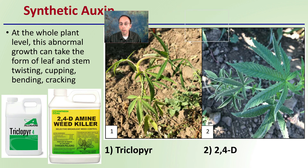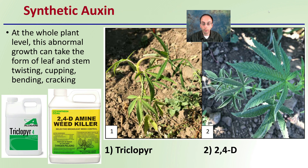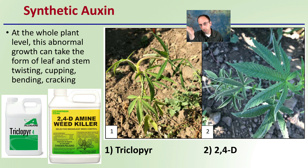Lastly, synthetic auxins — there are different types. At the whole plant level, abnormal growth can take the form of leaf and stem twisting, cupping, bending, cracking, and sometimes curling. We see evidence here of the plant just getting a funky look to it. Just because you see leaf curling doesn't always mean herbicide was applied, but if you know one of these has been applied in the area — particularly 2,4-D, which is very well known for its drifting abilities — and you see this curling, that's an indication you may be getting some herbicide drift.